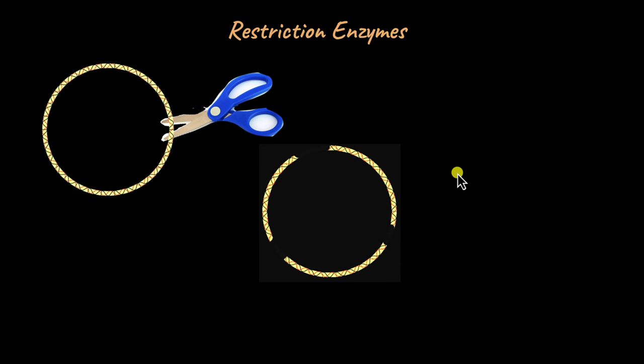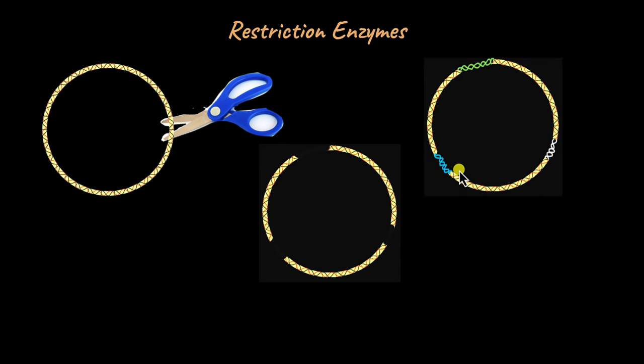What if I told you that you could take a piece of DNA, use scissors, cut it into fragments, and insert DNA from another organism to make a genetically modified DNA? Is this even possible? Doesn't it sound like something out of Jurassic Park? But what I'm talking about is possible and has been possible for quite some time now.